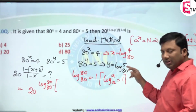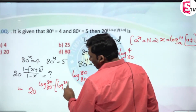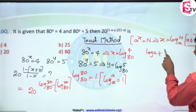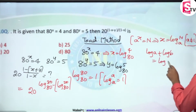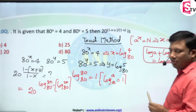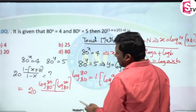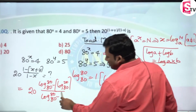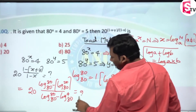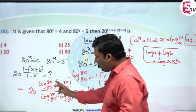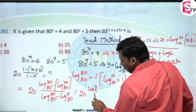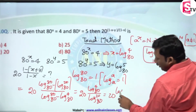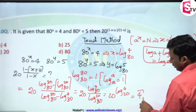Using the identity log a + log b = log(a×b), so log 4 base 80 + log 5 base 80 = log 20 base 80. The denominator 1 - x = log 80 base 80 - log 4 base 80. Using log a - log b = log(a/b), that gives log(80/4) base 80 = log 20 base 80. So the expression becomes 20^(log 4 base 80 / log 20 base 80), and the answer is 4.